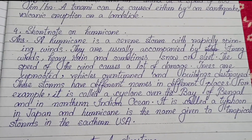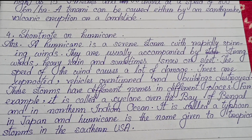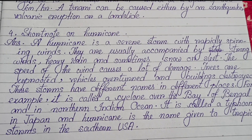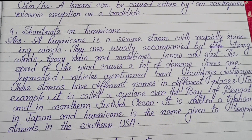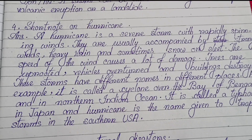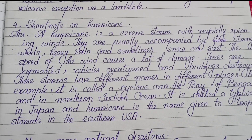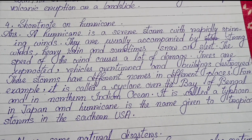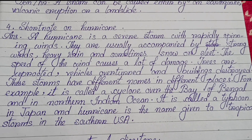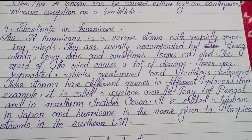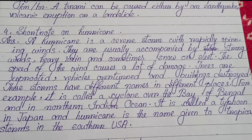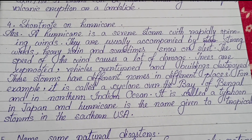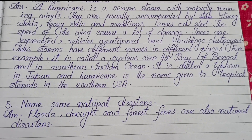Number four: Short note on hurricane. A hurricane is a severe storm with rapidly spinning winds, usually accompanied by strong winds, heavy rain and sometimes snow or sleet. The speed of the wind causes a lot of damage — trees are uprooted, vehicles overturned and buildings destroyed. These storms have different names in different places: it is called a cyclone over the Bay of Bengal and in the northern Indian Ocean, a typhoon in Japan, and hurricane is the name given to a tropical storm in the southern USA.